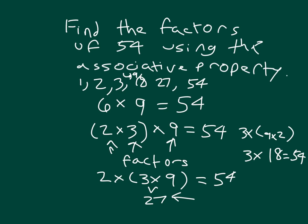And then, so those are our factors of 54: 1, 2, 3, 6, 9, 18, 27, and 54, by using the associative property.